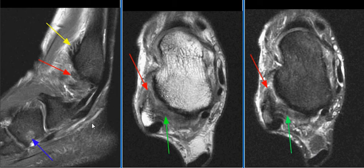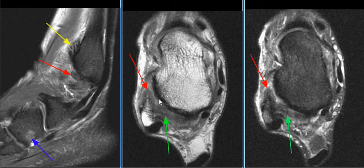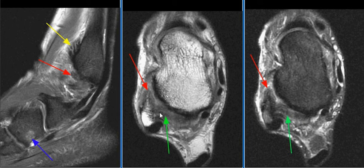We have an MRI examination of the right ankle. There is a complete tear of the anterior talofibular ligament, as seen with red arrows on these images. There is a high-grade sprain of the posterior talofibular ligament, as seen on these images with green arrows.